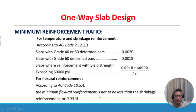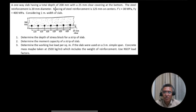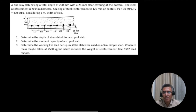For flexural reinforcement per ACI Code 10.5.4, the minimum flexural reinforcement is not to be less than the shrinkage reinforcement or 0.0018. Example: a one-way slab with total depth of 200 mm, 25 mm clear cover at the bottom, 20 mm diameter steel reinforcement at 125 mm spacing on centers. fc' = 30 MPa, fy = 400 MPa, considering one meter width of slab.